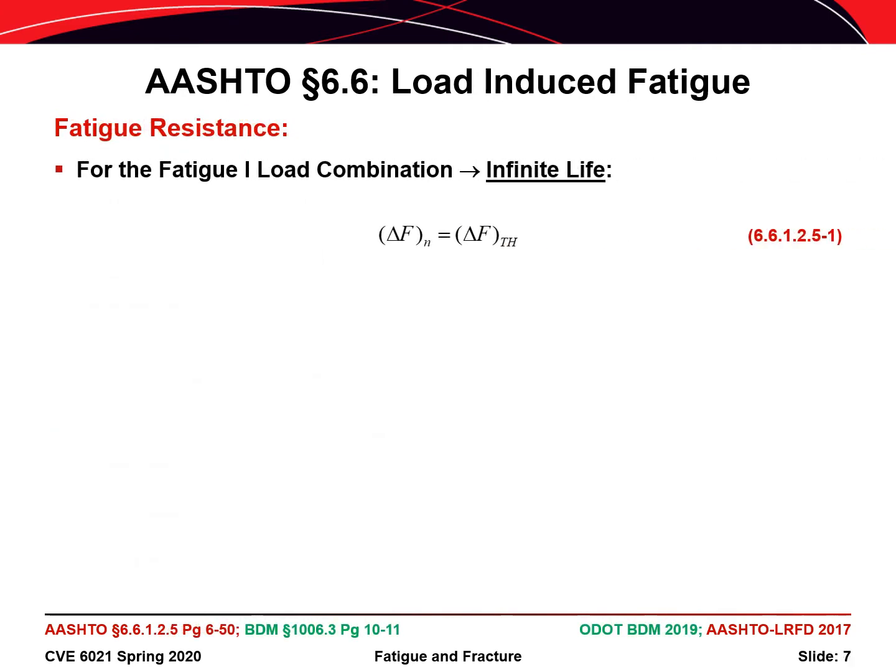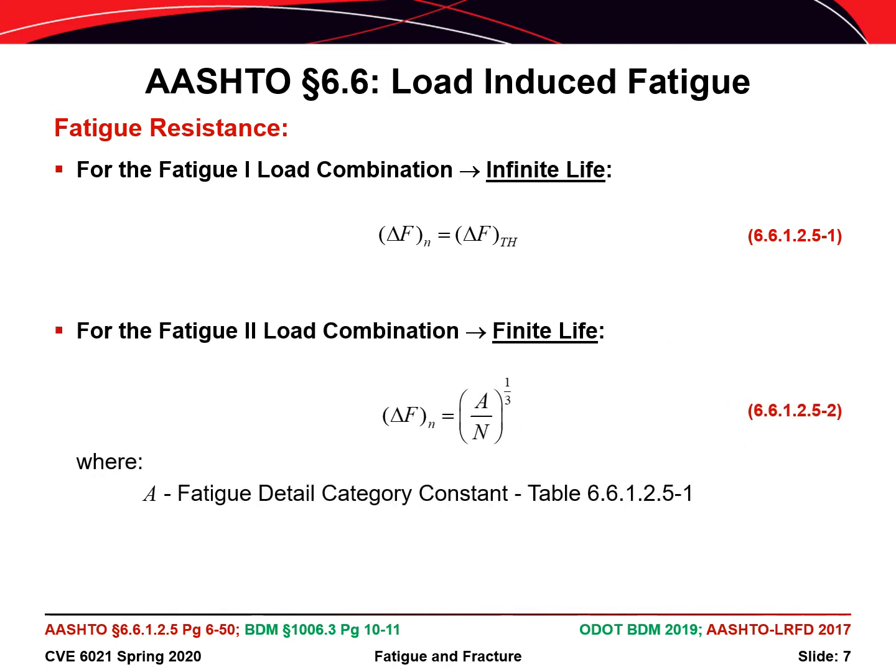The fatigue strength needed in our design criteria is determined as follows. If the fatigue check is being made for infinite life with a Fatigue 1 combination, then the fatigue strength delta capital F sub N is simply the fatigue limit, delta F sub TH — the fatigue threshold — below which the detail will survive theoretically forever. This corresponds to the horizontal portion of the SN curve. On the other hand, if the fatigue check is being made for finite life with Fatigue combination 2, then the fatigue strength delta F sub N is taken as A over N to the 1/3 power, which corresponds to the slope portion of the SN curve.